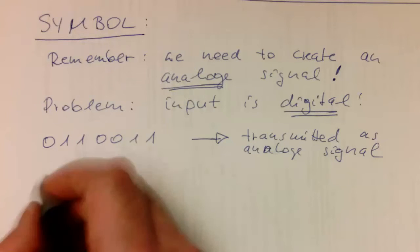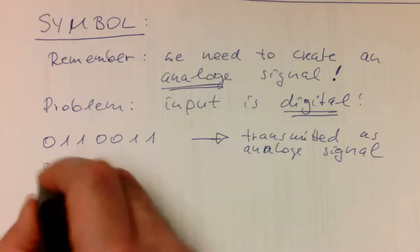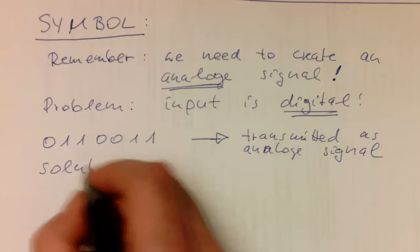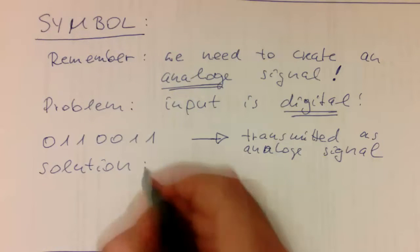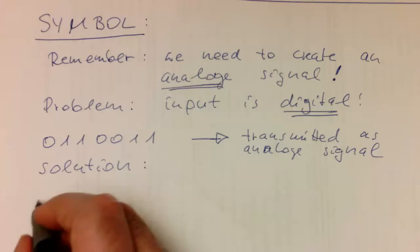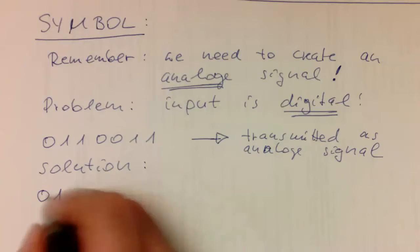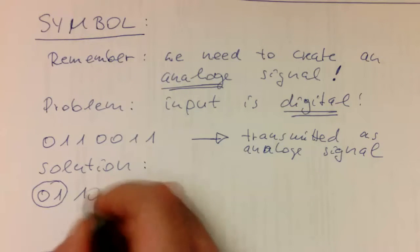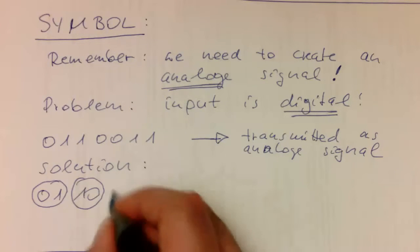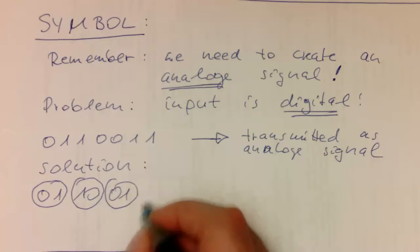And so the solution is to create chunks of this data. So if I draw this again here, this is the first chunk here. Then this is the second chunk here, the third, and so on and so on.